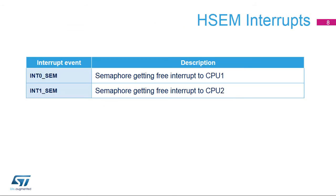Here is an overview of HSEM interrupt events. When a semaphore is freed, an interrupt can be generated to a CPU. Each CPU has its own set of semaphore enable, or IER, and status, or ISR, states before the masking, or MISR, and clear, or ICR, registers.